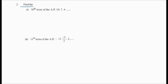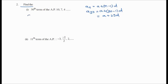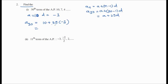Find the 30th term. Formula: an = a + (n-1)×d, so a30 = a + 29d. Here a = 10 and d = -3. So a30 = 10 + 29×(-3) = 10 - 87 = -77 is the answer.